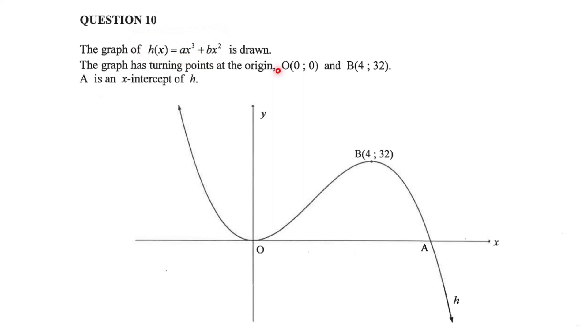The graph has turning points at the origin and B(4, 32). So the origin is the turning point and the coordinates of B is the other turning point. A is the intercept with the x-axis.